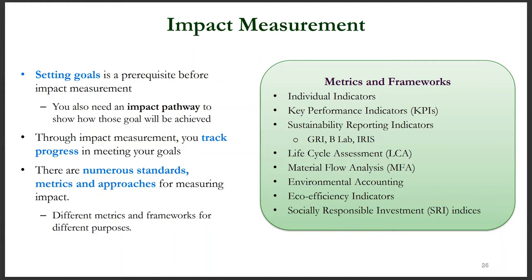Some of the frameworks or metrics commonly used for measuring social and environmental impact are individual indicators, key performance indicators, sustainability reporting indicators such as GRI, B-Lab, IRIS, material flow analysis, life cycle assessments, and others.